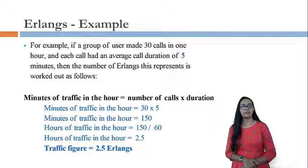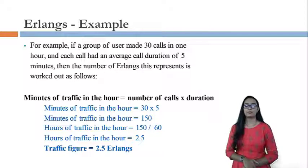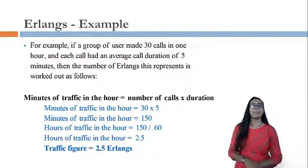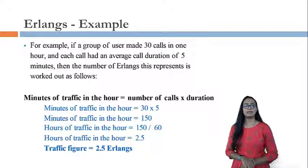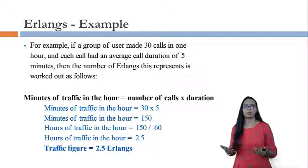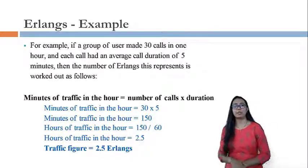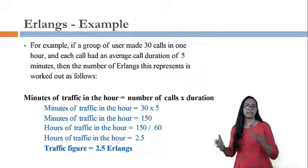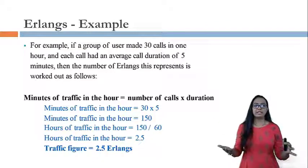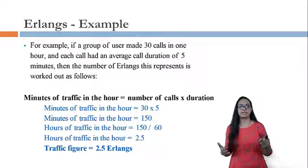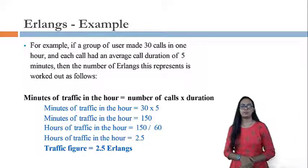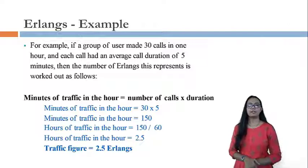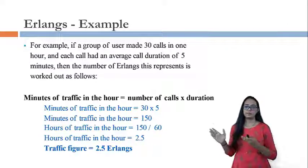Here is a worked example: if a group of users made 30 calls in one hour and each call had an average duration of 5 minutes, then minutes of traffic in the hour equals 30 multiplied by 5, giving 150 minutes. Dividing 150 by 60 gives 2.5 Erlang. So 2.5 Erlang is the traffic intensity occupied by that particular network or user group.